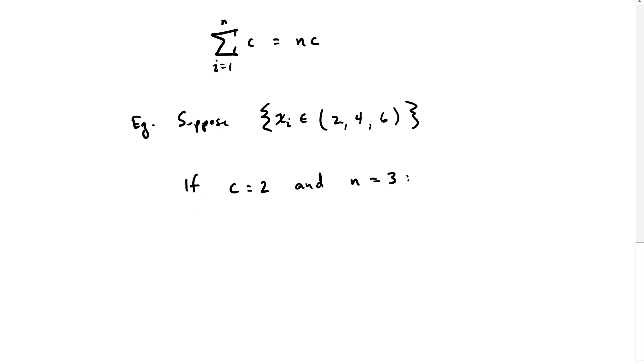The summation of 1 through n of c is just 2 plus 2 plus 2, which is 6. We didn't use any of our xi numbers. We just summed the constant number 2.